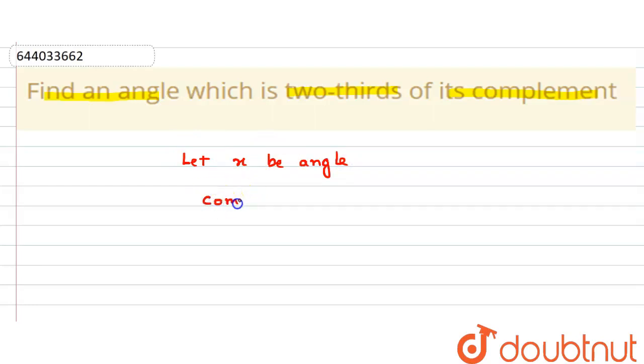The complement of angle x is 90 minus x. Here it is given that x is two-thirds of its complement. According to the question, we can write x equals two-thirds of its complement, that is x equals two by three times 90 minus x.